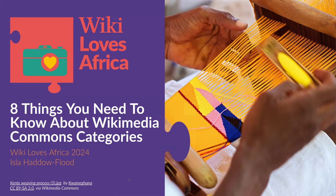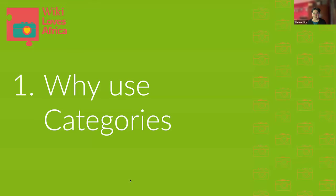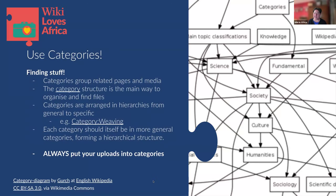Why use categories? I'm sure everybody understands how they work, but the idea is basically to find stuff. As Commons got bigger and bigger, it became more and more important — there was just all this material, so how do we find it and link things? Categories are essentially groups of related pages and media. When you upload media, there's stuff associated with a project, a topic, a country, a concept — there are whole different ways of categorizing that media.